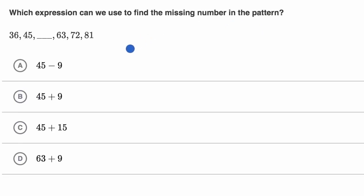All right, now let's try this together, and the way I would tackle it is I'll try to see, can I figure out the pattern between these numbers, and then I could try to figure out the missing one. So to go from 36 to 45, it looks like I'm increasing by nine, so I add nine.